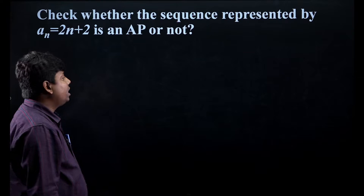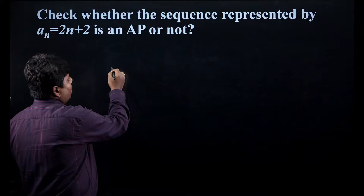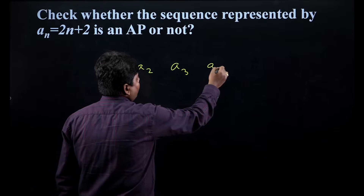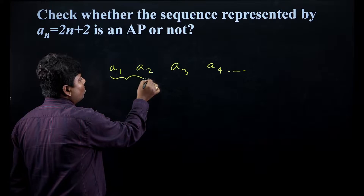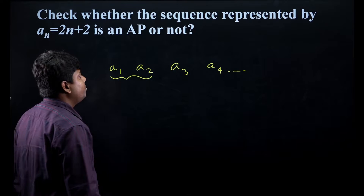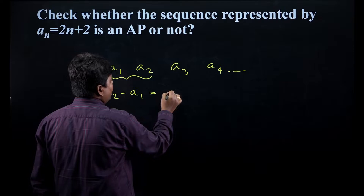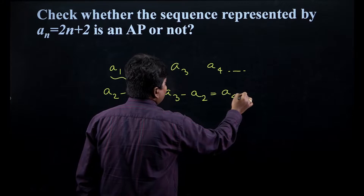As we know, arithmetic progression has one very important property. Suppose we have elements a1, a2, a3, a4, and so on. Arithmetic progression says that the difference between two consecutive elements has to be the same. It means that a2 minus a1 has to be equal to a3 minus a2, and equal to a4 minus a3.